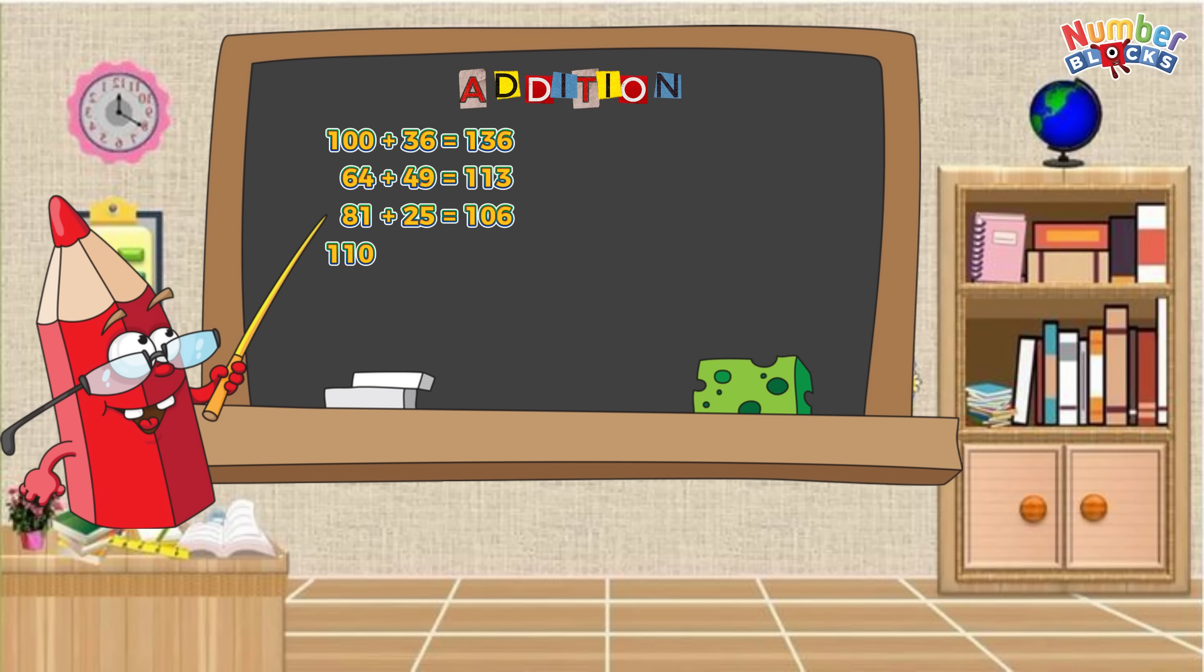110 plus 90 equals 200. 64 plus 29 equals 93.